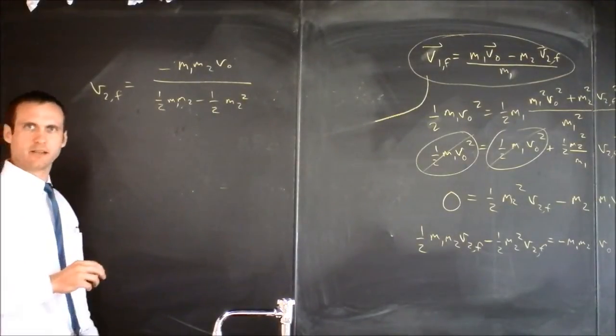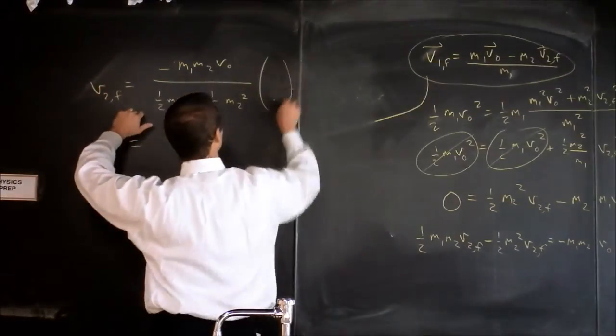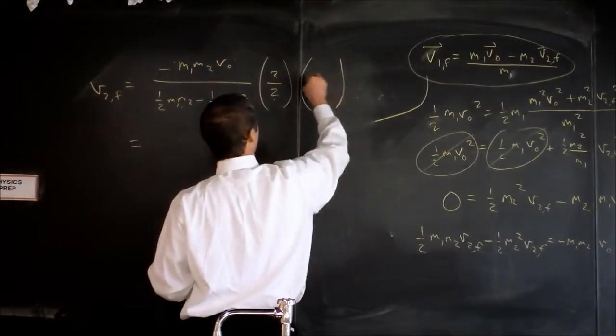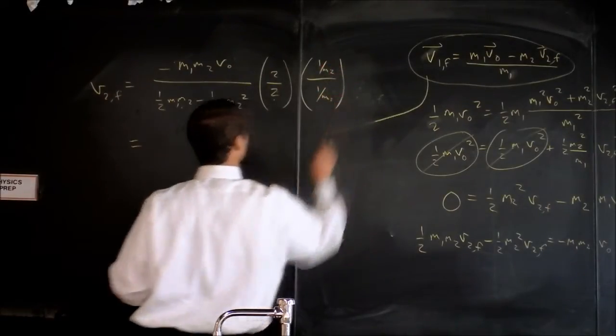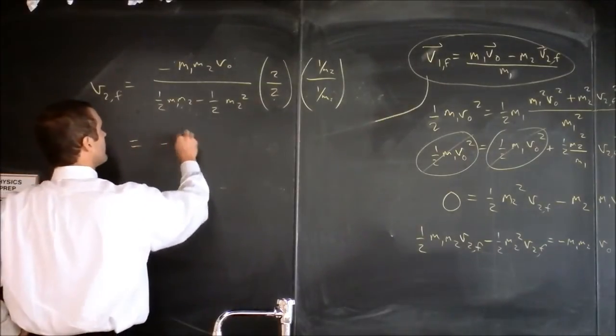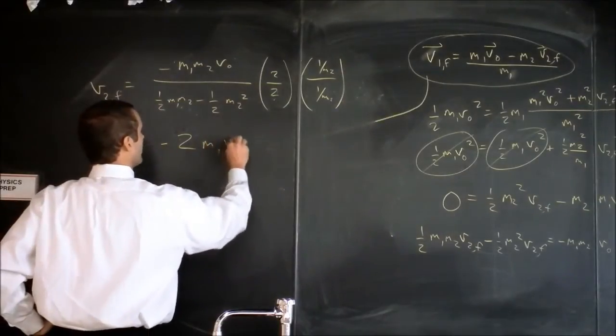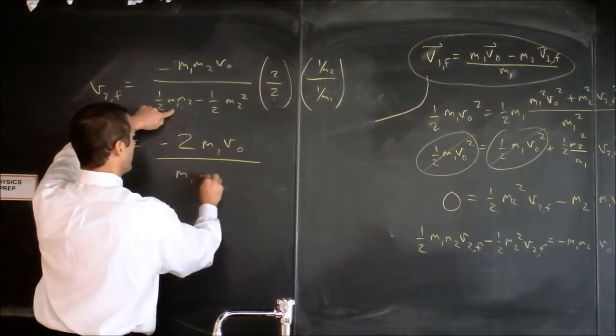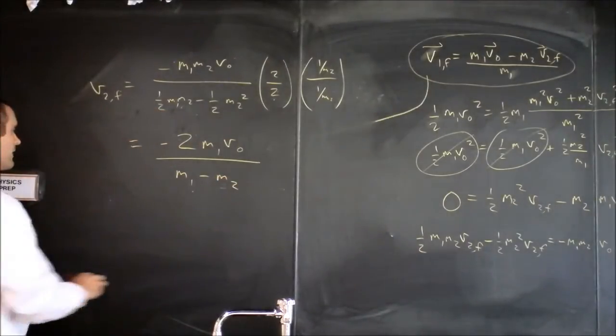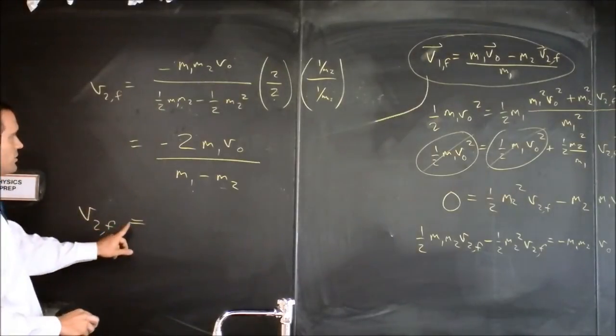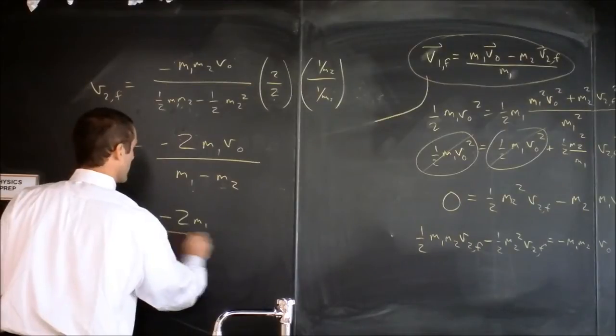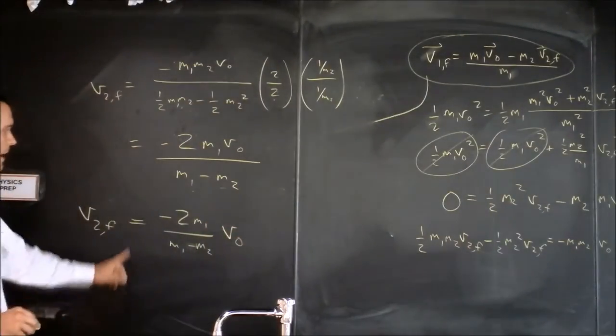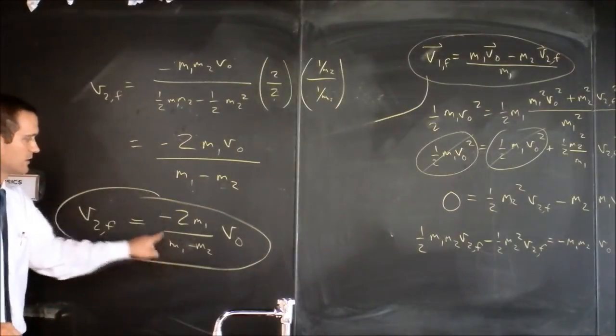Does it get prettier? I think it probably does. We can pretty that up a little bit. We multiply by 2 over 2, which is 1, and we've got M2s all over the place also. So I'm going to also multiply by 1 over M2. So I'm going to get negative 2 times M1 V0 divided by M1 minus M2. That's pretty. Let's write it one more time. We'll say that the final velocity of the object 2 is going to be negative 2 times M1 divided by M1 minus M2 times the initial velocity.